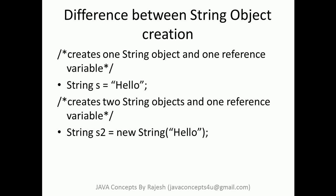With the second option, two string objects are created and one reference variable is created. One string object is created outside the pool, and the other having the value 'hello' is created inside the pool. The reference variable s2 will point to the object which is outside the pool.